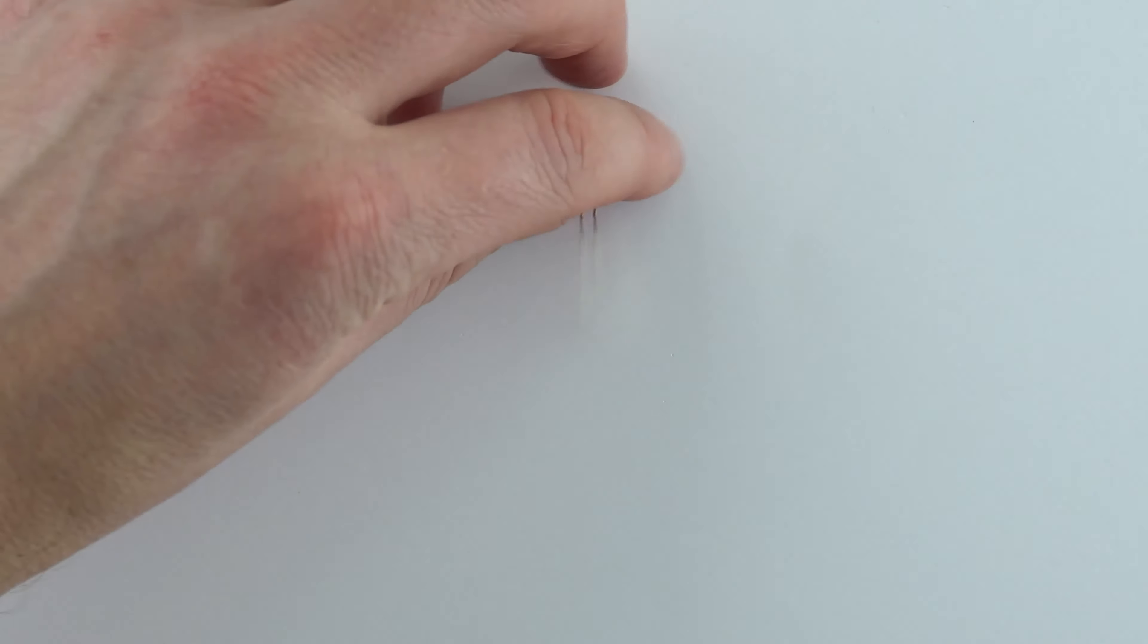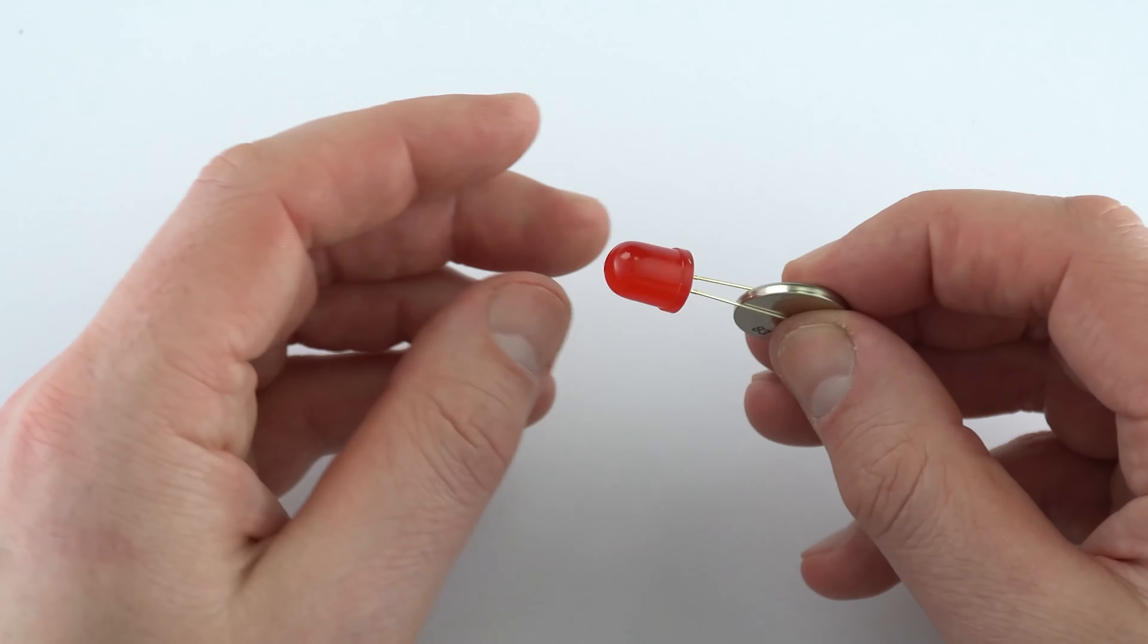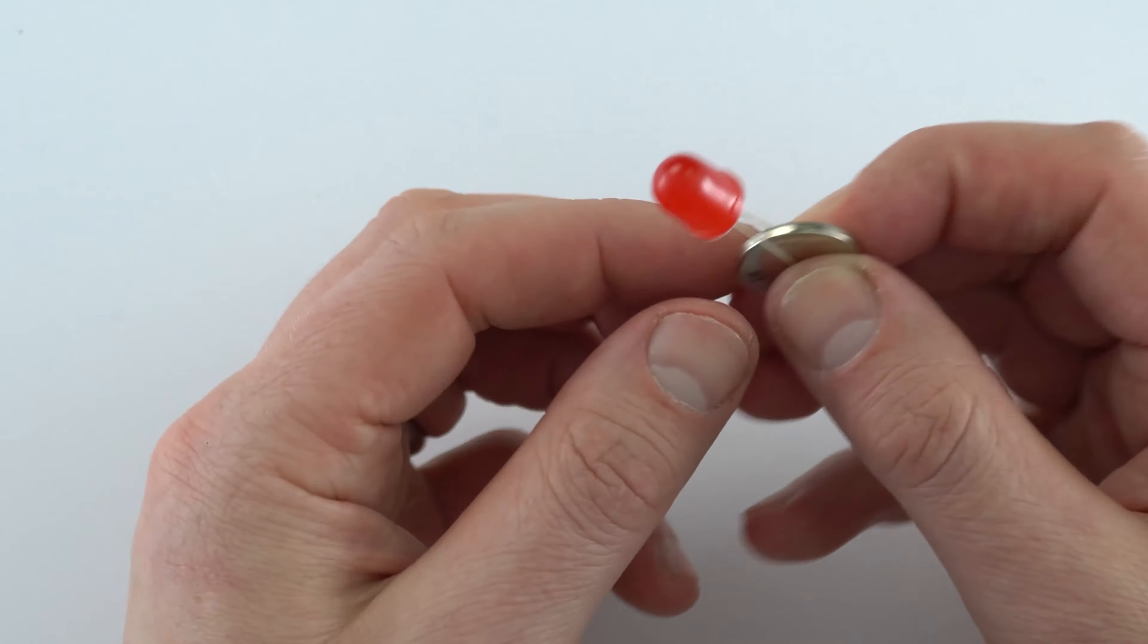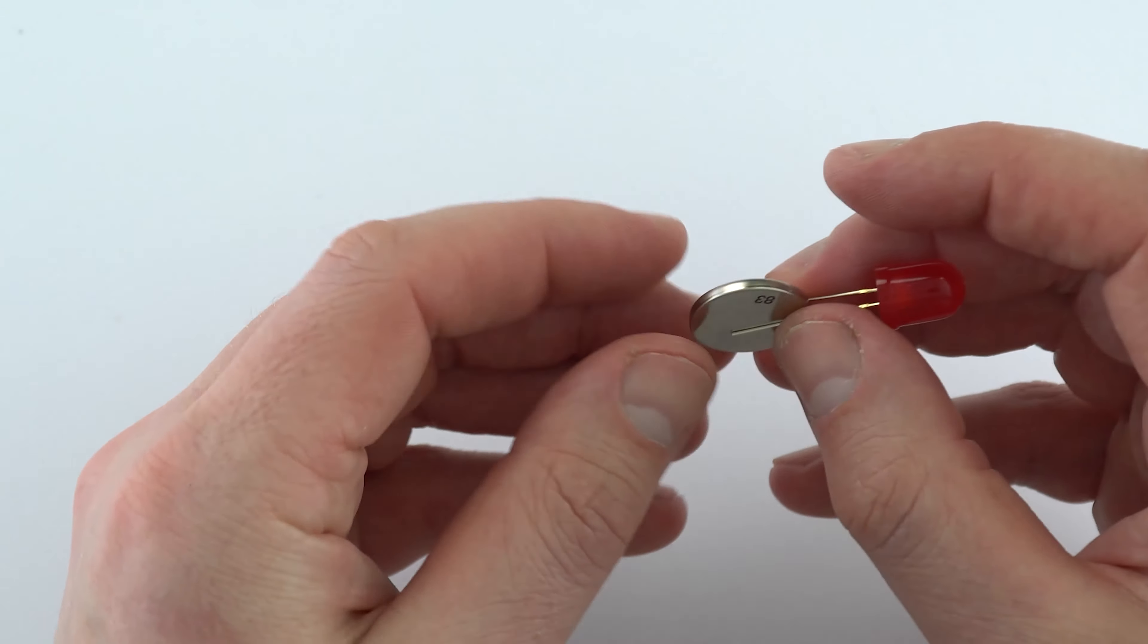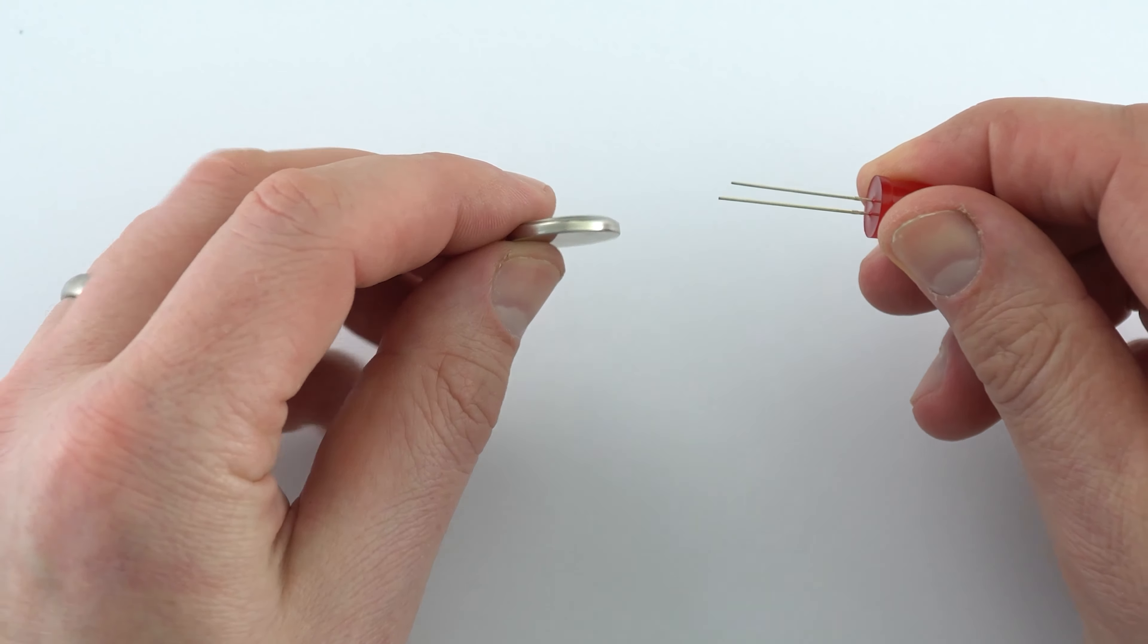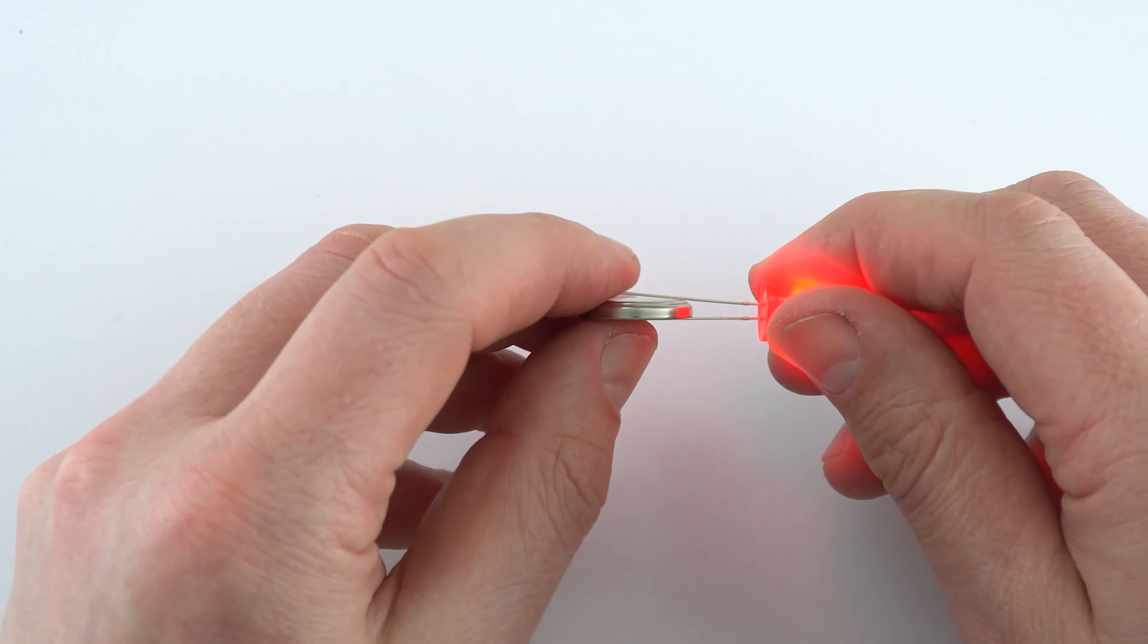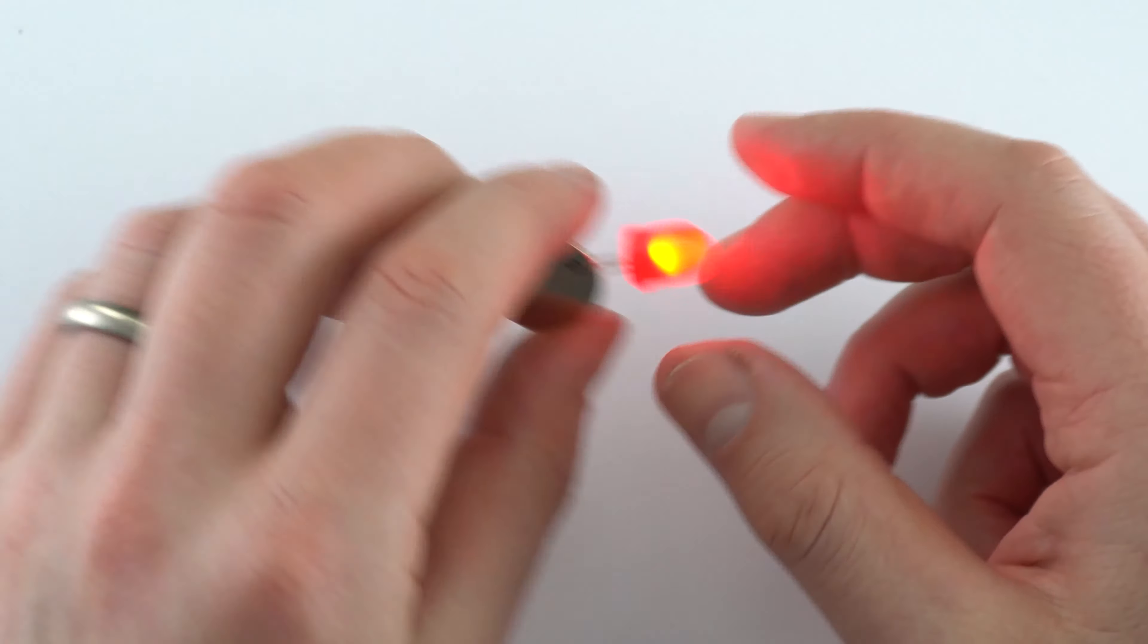This component here is a diode, and if we were to attach a diode to a cell, actually nothing's happening. But that's because the diode only allows current one way in a circuit. And if I was to take this off and flip it around so the longer metal leg is attached to the positive side of this cell, we then get light being emitted.